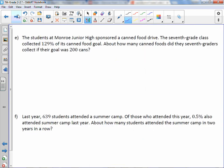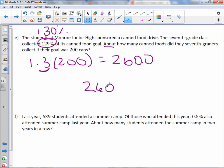Letter E. The students at Monroe Junior High sponsored a canned food drive. The 7th grade class collected 129% of its canned food goal. About how many canned foods did the 7th graders collect if their goal was 200 cans? Let's try the decimal method. We are estimating. I know that because it says about how many. I would say that's 130%. If I were to change this to a decimal, it would be 1.3 times 200 cans. So 1.3 times 200 is 26, add the two zeros, but we also have a decimal point, so it would be 260 cans.